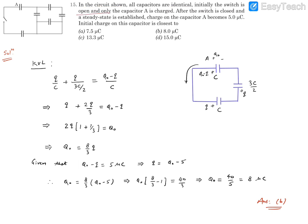all capacitors are identical. Initially, the switch is open and only capacitor A was charged. So this is A capacitor, this is switch, this is another part of the network.